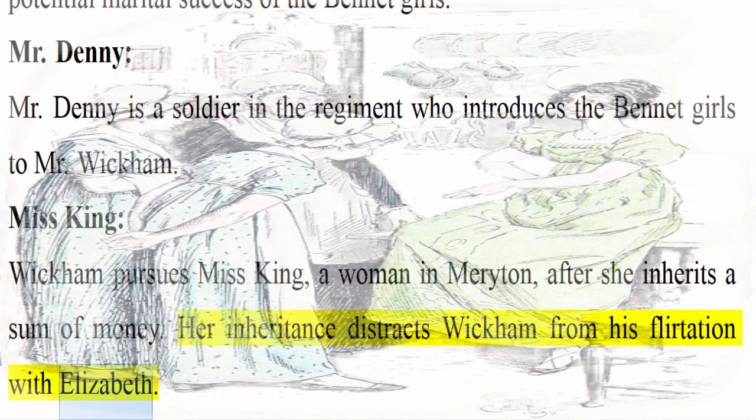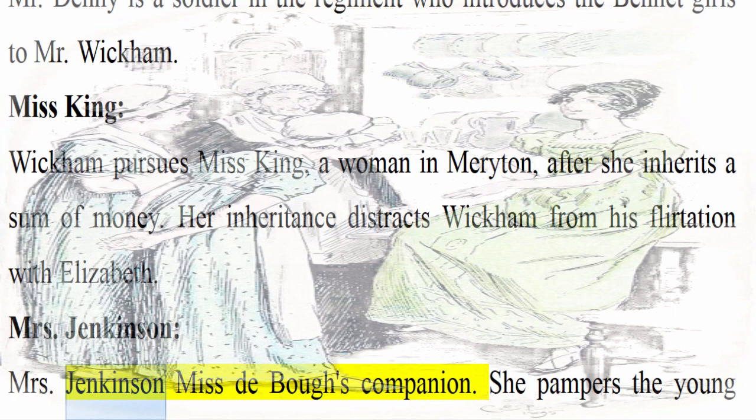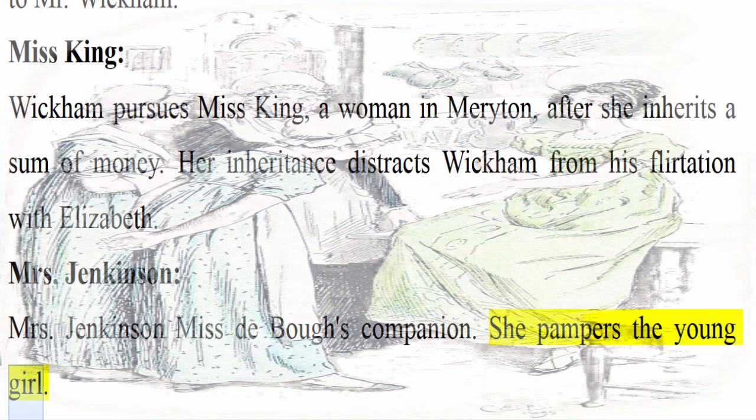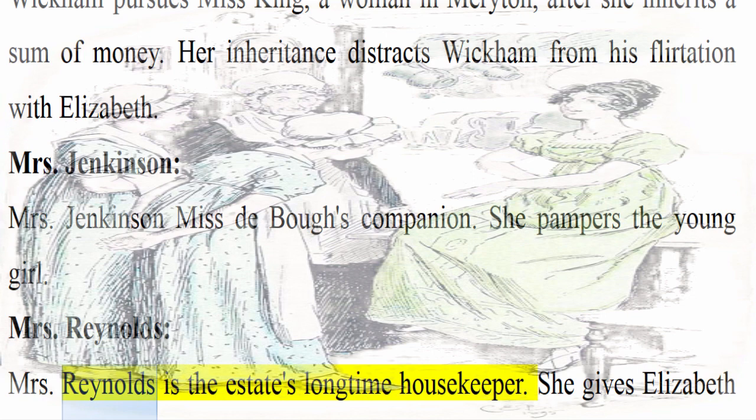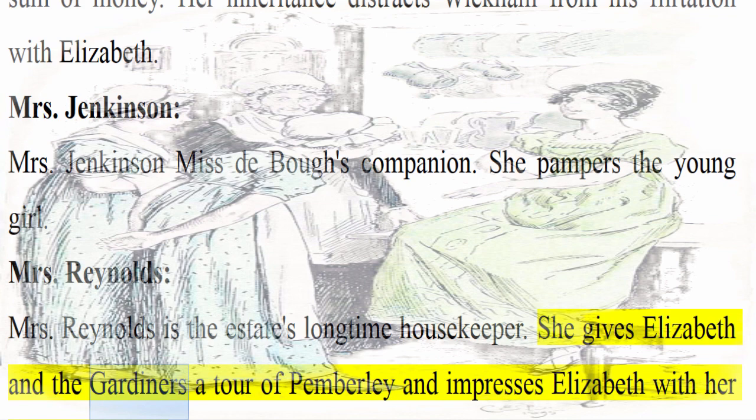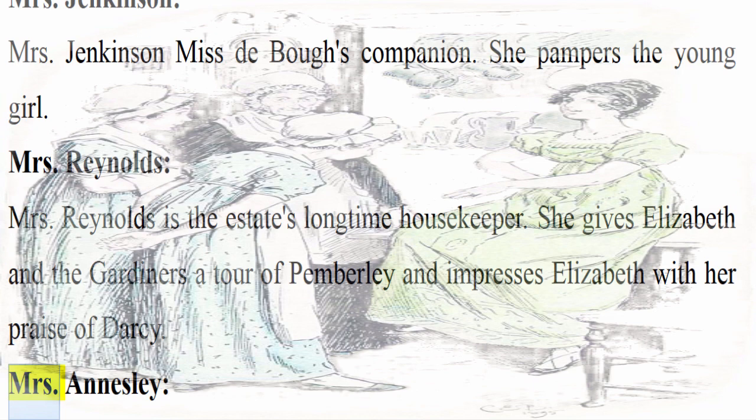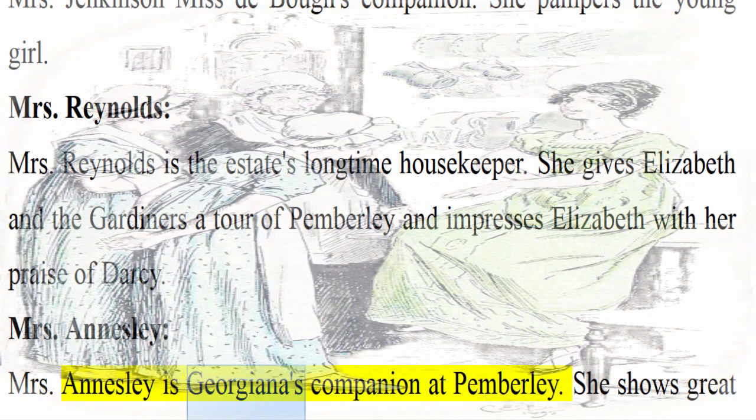Mrs. Jenkinson is Miss de Bourgh's companion and pampers the young girl. Mrs. Reynolds is the estate's longtime housekeeper. She gives Elizabeth and the Gardiners a tour of Pemberley and impresses Elizabeth with her praise of Darcy. Mrs. Annisley is Georgiana's companion at Pemberley. She shows great civility towards Elizabeth and Mrs. Gardiner when they visit, even though Bingley's sisters are rude to them.